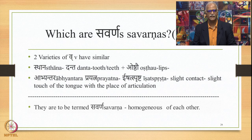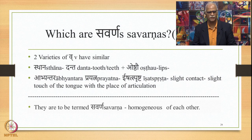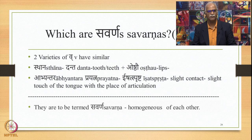Next, the sound V has 2 varieties — a nasalized one and a non-nasalized one, V and V. Both have Sthana Danta and Oshtha, Dantoshtham — Danta and Oshthav — and the Abhyantara Prayatna is Ishatsprashta, slight contact or slight touch of the tongue with the place of articulation. Therefore both these varieties are to be termed Savarna or homogeneous of each other.